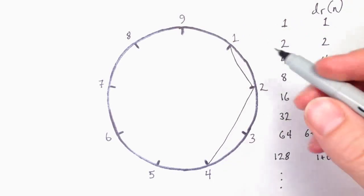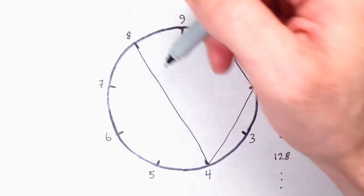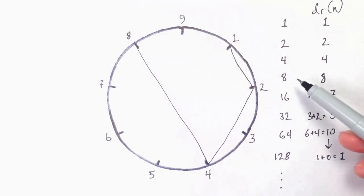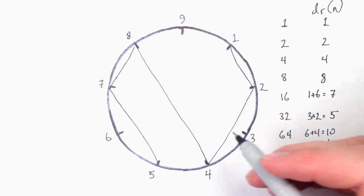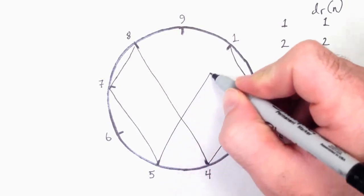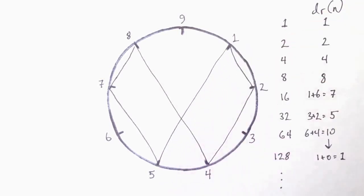Connect the digital roots as they occur in the circle. So we start at 1, go to 2, then to 4, then to 8. 16 would be the next number. However, since it's not on the circle, we need to use its digital root instead, so we connect 8 to 7. The digital root of 32 is 5, so we connect 7 to 5, and we can see this shape almost complete. After 5, we have 64. Its digital root is 1, so 5 connects back to 1. Once we return to 1, the cycle begins all over again, and this shape, or vortex, goes over and over for infinity.